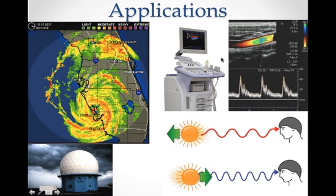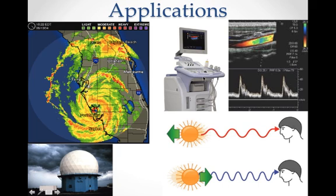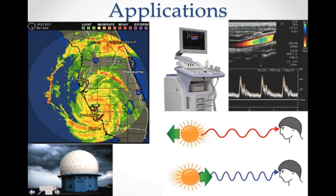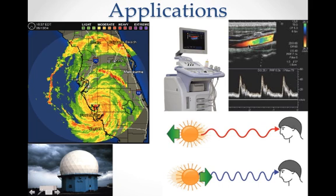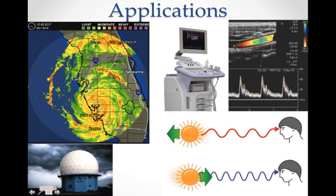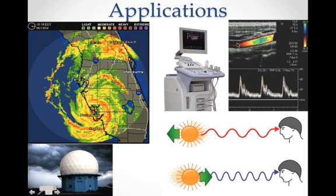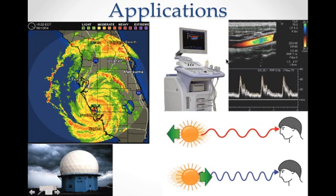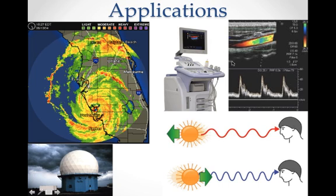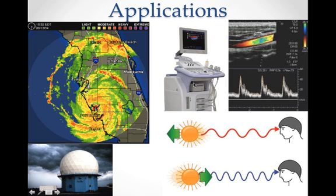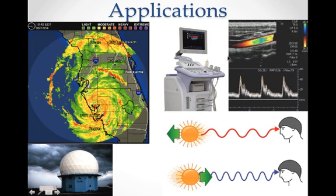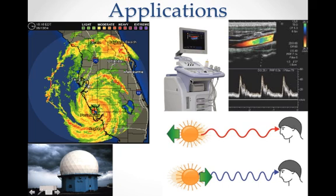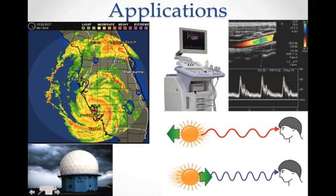We also have Doppler ultrasound machines where we can actually visualize blood flowing through a vein by the different Doppler shifts and determine the relative speed of the blood movement.